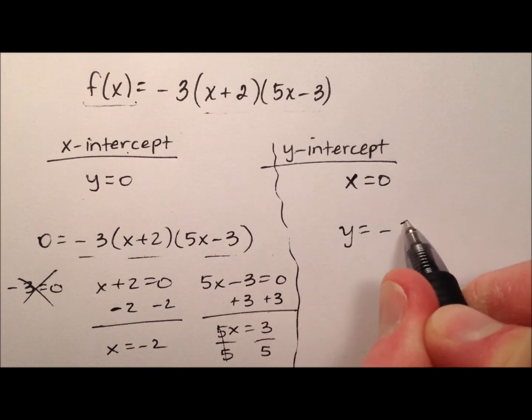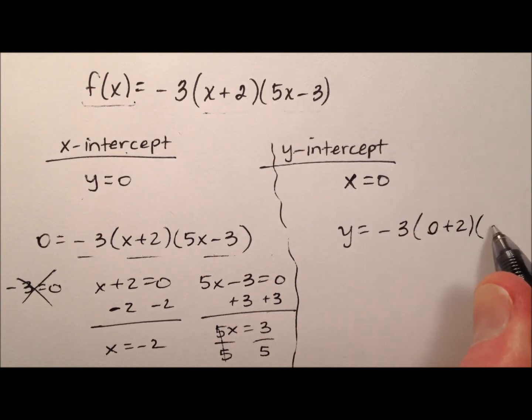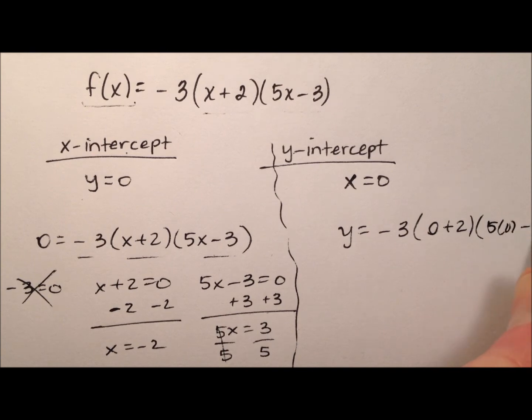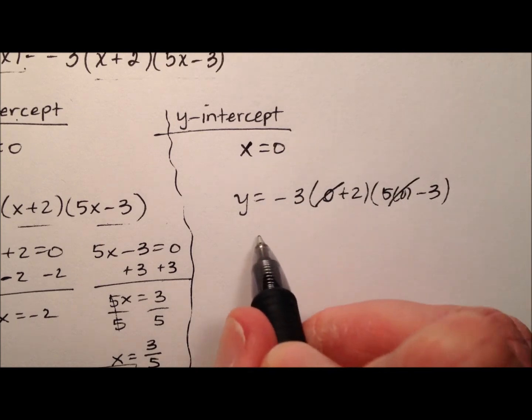And we can say y equals negative 3 times (0 plus 2) times (5 times 0 minus 3). And this is really nice because this just zeros out and that zeros out.